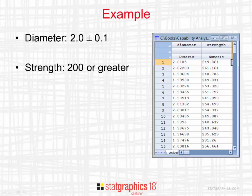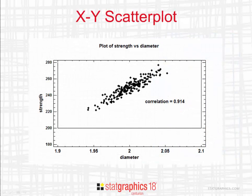You can see here a data sheet containing measurements of the diameter and strength of 200 medical devices. The specification for the diameter is 2.0 plus and minus 0.1. The specification for strength is that it should be 200 or greater. Here I've created an x-y scatter plot for the 200 bivariate observations. You'll notice that all the observations are within the spec, which is defined by this rectangular region. You'll also notice that there's a strong positive correlation between the two variables. It's in excess of 0.9.